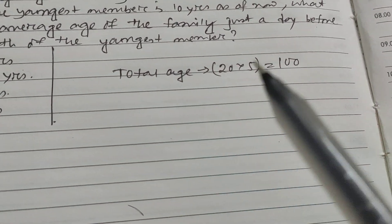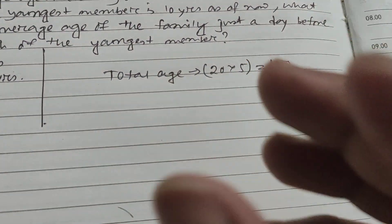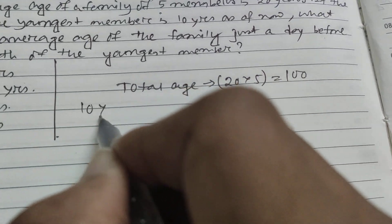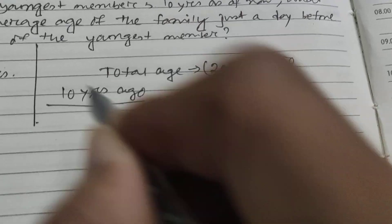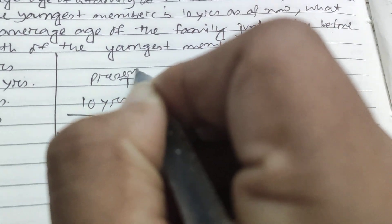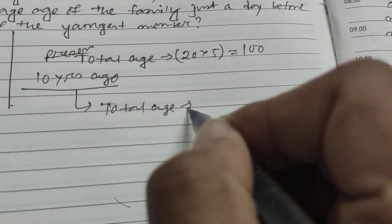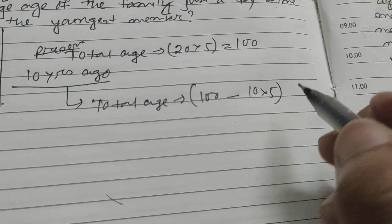In that time, total age was how much? So 10 years ago, total age was 100 minus 10 into 5, which is 50.